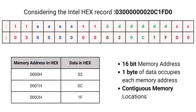The data field starts with 02 as the first byte, 0C as the second byte, and 1F as the third byte — giving us three bytes of data, as indicated by the LL field. Finally, based on all previous fields the checksum is calculated and obtained as D0. Regarding memory addressing: the starting address is 0000H, which is occupied by the first data byte 02.